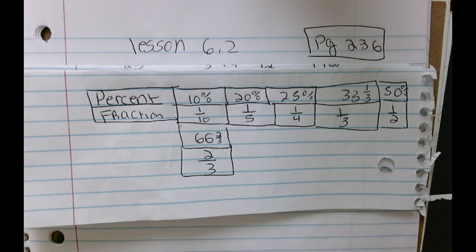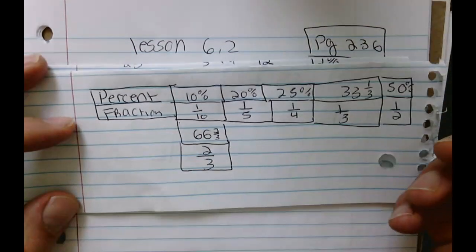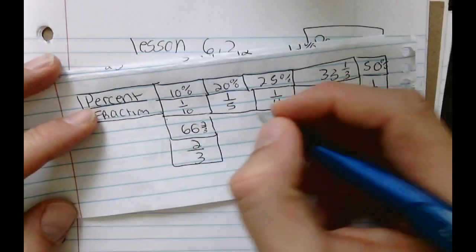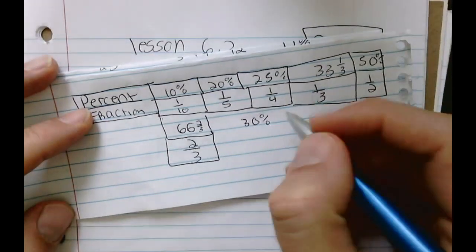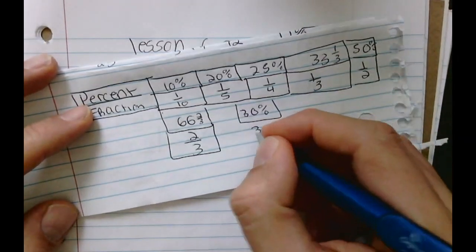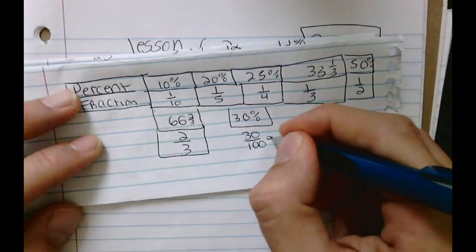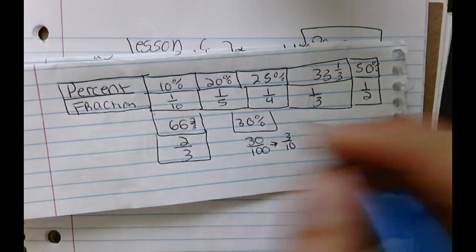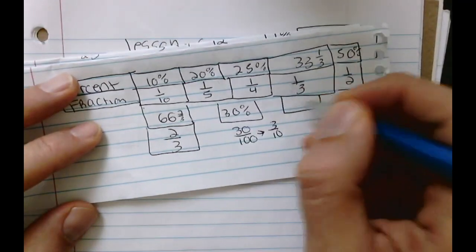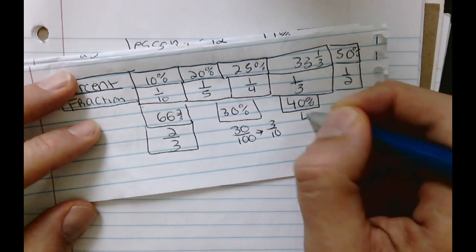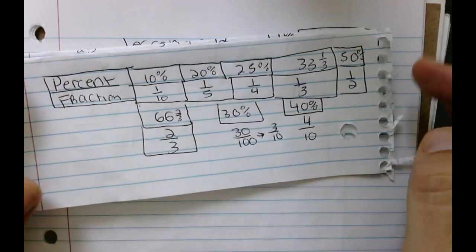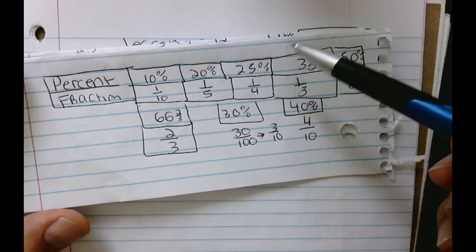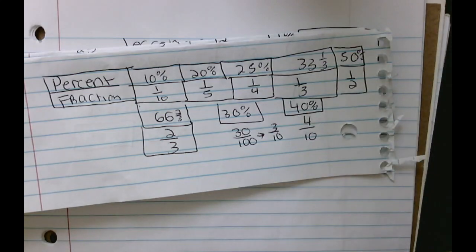Some other important equivalent fractions are basically anything that ends in a zero. For example, 30% can be written as 30 over 100, or actually, 3 over 10. So 40% can be written as 4 over 10, and so on and so forth. So we use a lot of these fractions today in our lesson. I'll be referencing this sheet too.